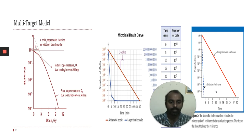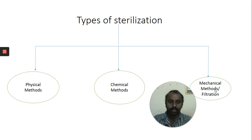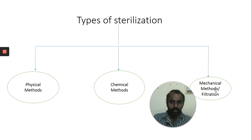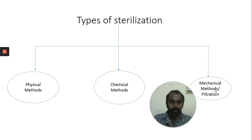There are three types of sterilization: physical methods, chemical methods, and mechanical methods (filtration). An important principle is that the container in which sterilization is performed should be the final container — you should not transfer the sterilized product to another container. If the sterilized container is not the final container, use microbial filters of 0.22 or 0.45 microns to filter into a fresh sterile container.